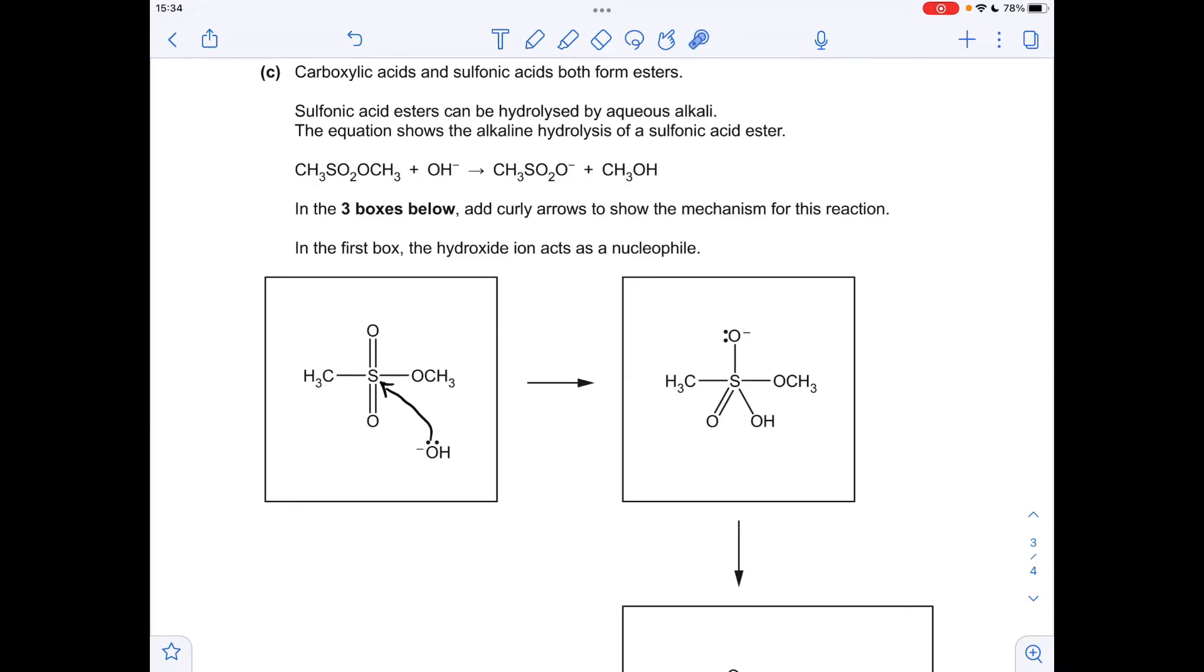And that backs up the fact that we're told the hydroxide ion acts as a nucleophile, it's donating a pair of electrons to the sulfur. What else has happened, the double bond has gone to a single bond, and this OH has been left as an OH minus, so a pair of electrons has gone up there like that.